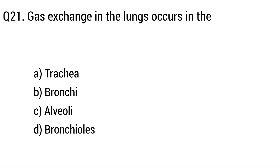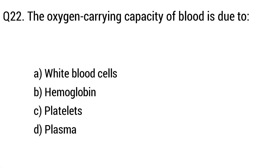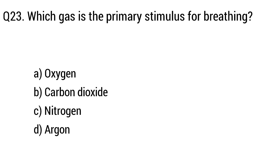Question 21. Gas exchange in the lung occurs in the. Option A: Trachea. B: Bronchi. C: Alveoli. D: Bronchiole. The right answer is Option C: Alveoli. Question 22. The oxygen carrying capacity of blood is due to. Option A: White blood cells. B: Hemoglobin. C: Platelets. D: Plasma. The right answer is Option B: Hemoglobin.